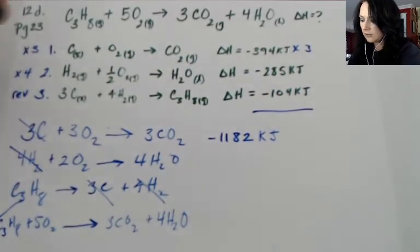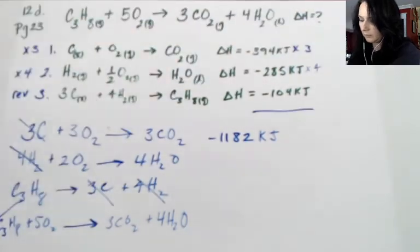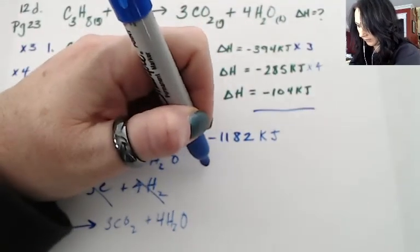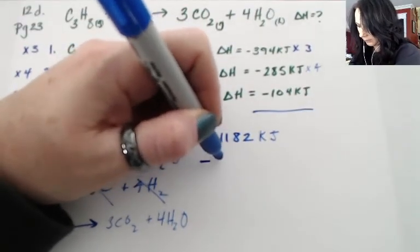The second reaction was times 4, so I'll make my little note here, so 285 multiplied by 4 gives me a negative again because it's exothermic: 1140 kilojoules.